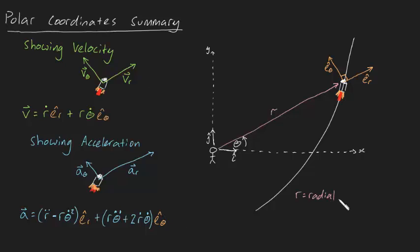R is known as the radial distance in meters, and theta is known as the angular measurement in radians. These other terms are simply their time derivatives.